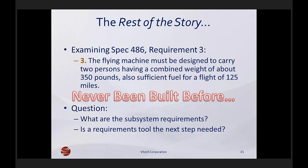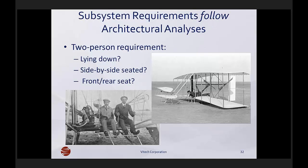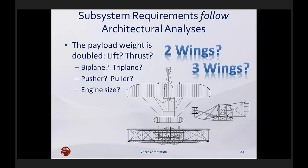If one was to write a subsystem or component requirement, then you'd have to have a physical architecture to hang that on. What factors affected the physical architecture of the 1907 flying machine? It had to carry two people. From an architecture perspective, how should they be situated — side by side, front-rear? Should they be lying down like the first flyer? The doubling of the payload really impacted a number of things, and each of these architectures needed to be analyzed before subsystem requirements could be written.